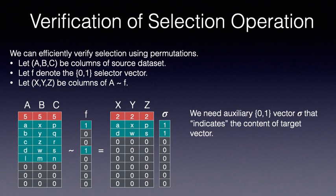To aid the verification, we ask the prover to supply a binary vector sigma, which is a permutation of f with all the ones aligned at the start. The same permutation of the rows of the source dataset, masked according to vector f, yields the target dataset as we illustrate on the next slide.